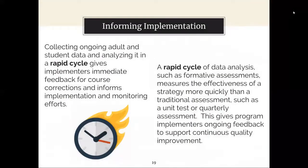From the DLT, BLT or CSLT, and TBT level, there are various considerations when discussing implementation. Collecting ongoing adult and student data and analyzing it in a rapid cycle gives implementers immediate feedback for course corrections and informs implementation and monitoring efforts. Starting at the TBT level, teams may be focusing on a specific skill, strategy, or standard. The TBT may decide to select an evidence-based strategy that directly impacts the deficit area. The TBT cycle may be a short period of time—such as a week or two weeks—to measure the effectiveness of the adult actions on student performance. The time frame may be shorter or longer depending upon the depth and rigor of the standard and the complexity of the selected strategy.